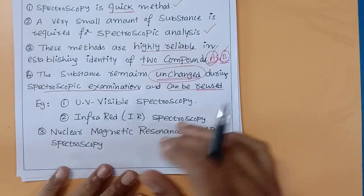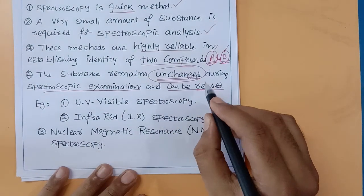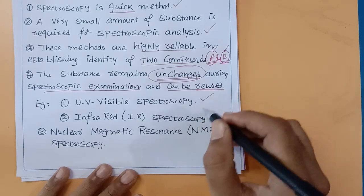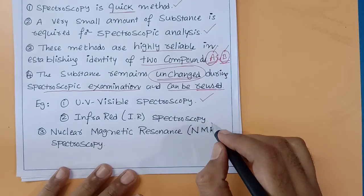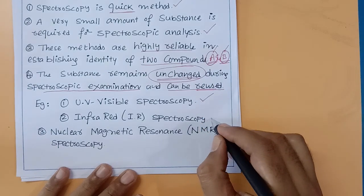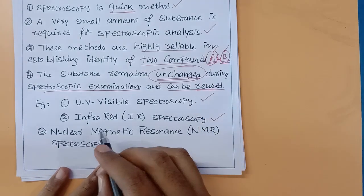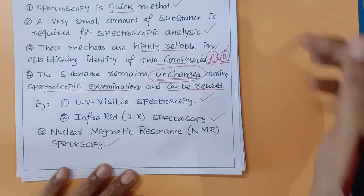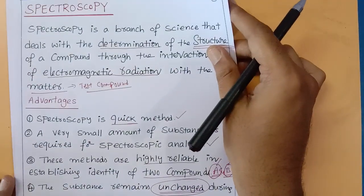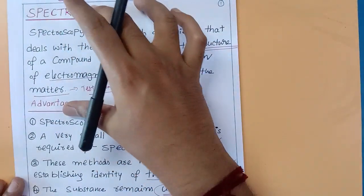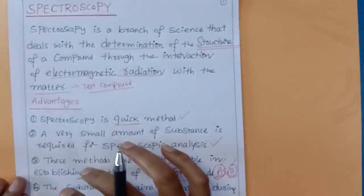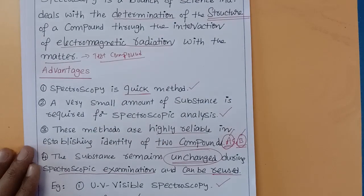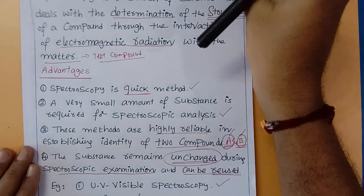Let's look at some examples of spectroscopy types. Spectroscopy 1 is UV-visible spectroscopy. Spectroscopy 2 is infrared spectroscopy. Spectroscopy 3 is NMR — nuclear magnetic resonance spectroscopy. That is the introduction and advantages of spectroscopy.